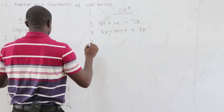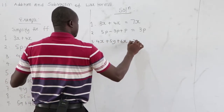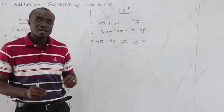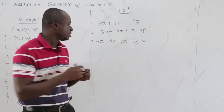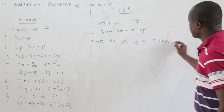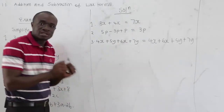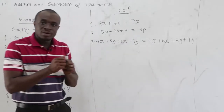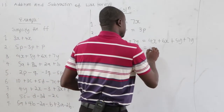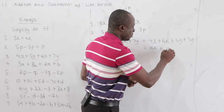The third example: 4x plus 5y plus 6x plus 7y. Here we have two different variables, x and y. So we group like terms: 4x plus 6x, then plus 5y plus 7y. We get 4x plus 6x equals 10x, and 5y plus 7y equals 12y.